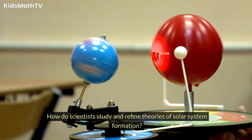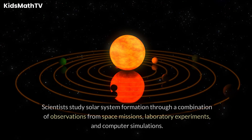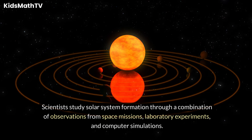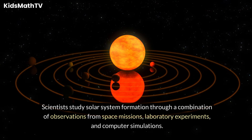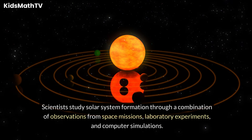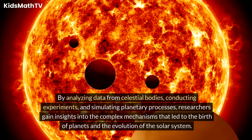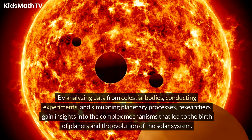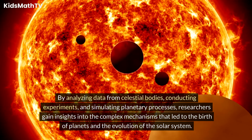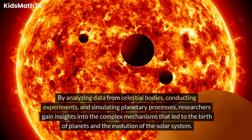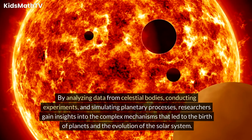Scientists study solar system formation through a combination of observations from space missions, laboratory experiments, and computer simulations. By analyzing data from celestial bodies, conducting experiments, and simulating planetary processes, researchers gain insights into the complex mechanisms that led to the birth of planets and the evolution of the solar system.